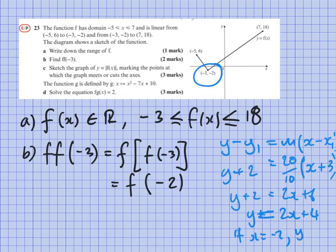Now if x is -2, that will give me y = 0. So using that now, that tells me that I've solved the equation on this side here. I know that f(-2) is 0. That looks reasonable given the way the question is drawn. Okay, let's take this on to part c: sketch the graph of y = |f(x)| marking the points at which the graph meets or cuts the axes.